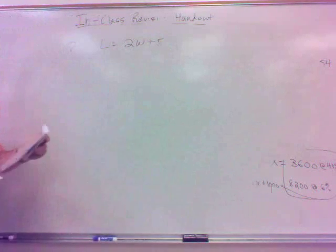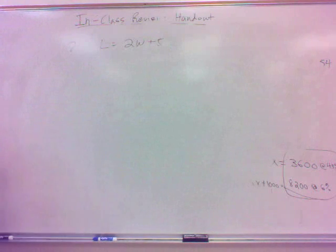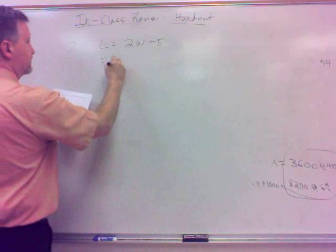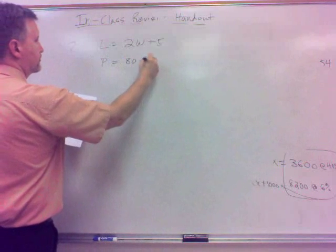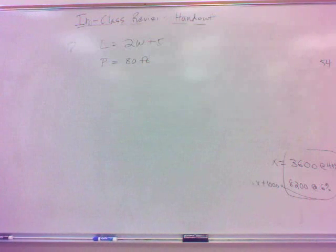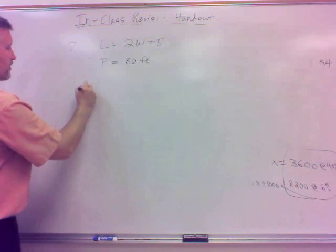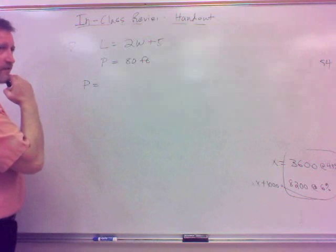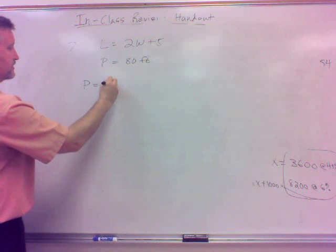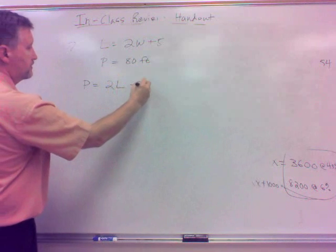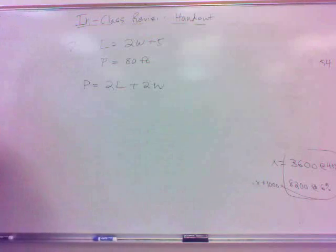It says the length of a rectangle is five feet longer than twice the width. How would that be? Well, twice the width, 2w, five feet longer, plus five. So that's a lot like we have on the other one. And the perimeter is 80 feet. Find the dimensions, the length and the width of this rectangle.